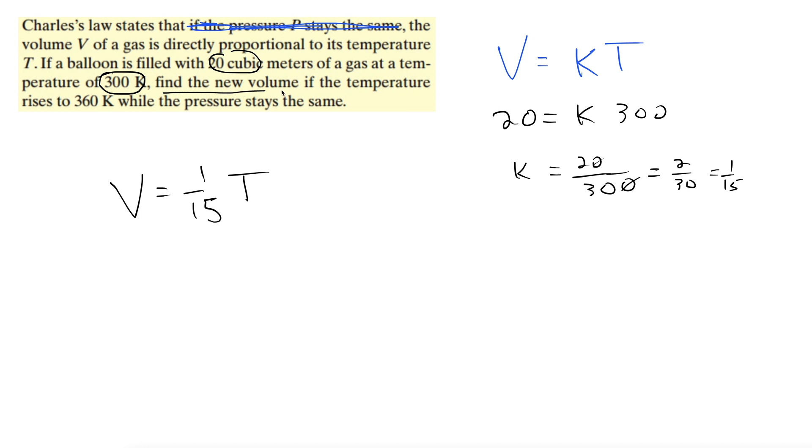it's saying find the new volume. So we want the new volume when the temperature is 360 Kelvin. So here we go. Volume equals 1/15 times 360. Toss that into the calculator. Let's see. 360 divided by 15. 24. 24. 24, 24 what? We have to put in the units for volume. Looks like our units for volume. Here we go. Cubic meters.